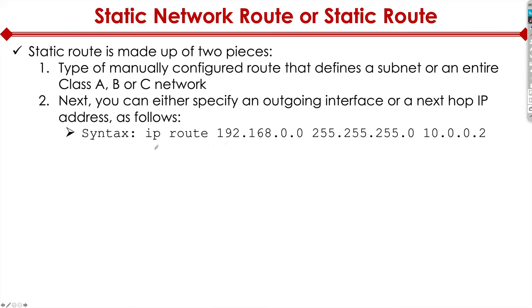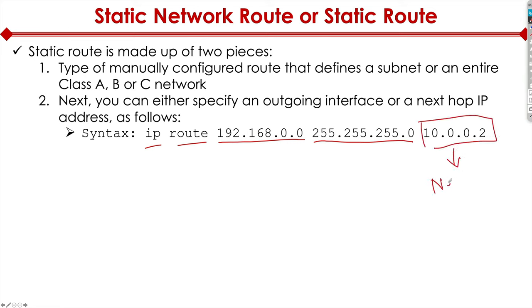On the router, we type in 'ip route', then we specify the network, then the subnet mask of that network, and finally we specify the next hop IP. So the next hop IP goes last, followed by the subnet mask, then the network address — and 'ip route' are the keywords. That's how we create a static route on a router.